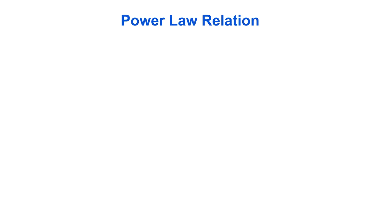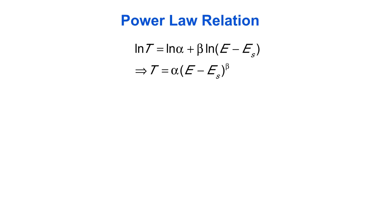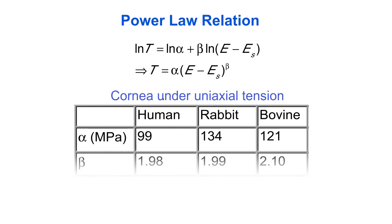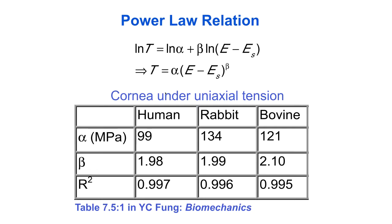Another relation that works well for some tissues is the power law approximation. For example, in the cornea of the eye, plotting the log of the stress versus the log of the strain gives a linear relationship, suggesting a power law of the form t equals alpha times e to the beta. Measuring these coefficients alpha and beta in cornea under uniaxial tension, we see that beta, the power for three different species, is very close to two, suggesting that a quadratic stress-strain curve is a good approximation for the cornea. Unfortunately, many tissues require much higher powers to get a good fit, making this formulation less attractive in those cases.